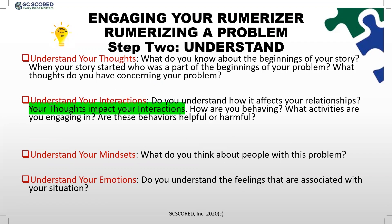As you engage with yourself or anyone you are interested in supporting, ask yourself: what do I know about the beginnings of my story? When this particular story started, who were the people that were a part of it, and what thoughts do you have concerning this story? Many times we want to know what other people are thinking about us — it's now time to look at what you are thinking about you. These are systematic steps and questions to help you dig deeper, move from imbalance to balance, and from unconscious living to conscious living as you problem solve.